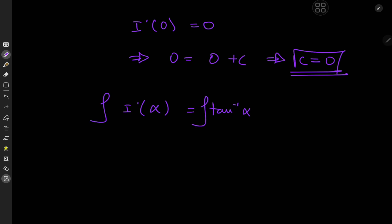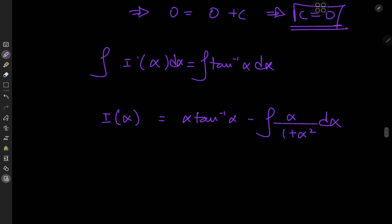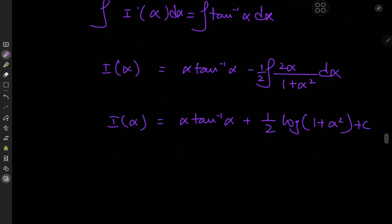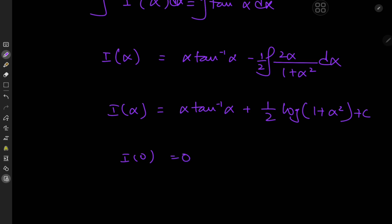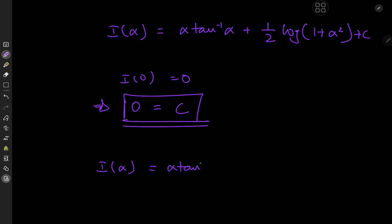Integrating once more with respect to alpha gives us I of alpha on the left-hand side. On the right, integration by parts gives us alpha times inverse tangent alpha minus the integral of alpha divided by (1 plus alpha squared) d alpha. This is a simple integral to evaluate, giving us alpha times inverse tangent alpha plus one half of the logarithm of 1 plus alpha squared plus another constant of integration c. Recall that I of 0 equals 0, so 0 equals 0 plus one half of log 1, which is 0. Again the constant is conveniently 0. So finally, I of alpha equals alpha times inverse tangent of alpha plus one half of the logarithm of 1 plus alpha squared.